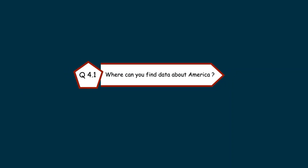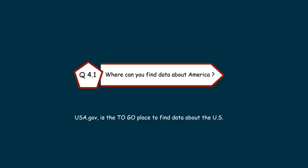Here are the answers from practice quiz number four. Question four-one: where can you find data about America? The correct answer is usa.gov is the place to go to find data about America.